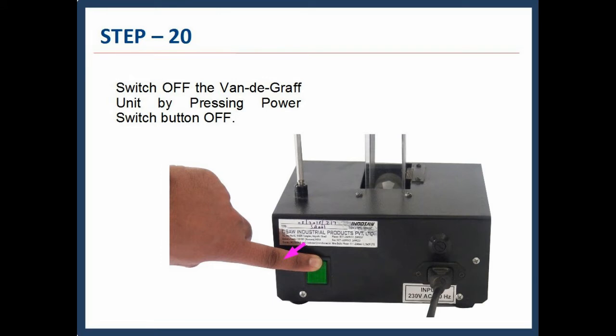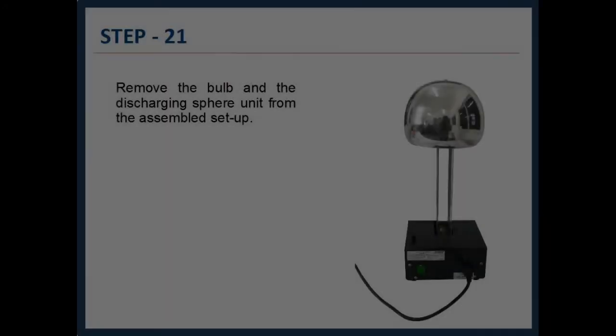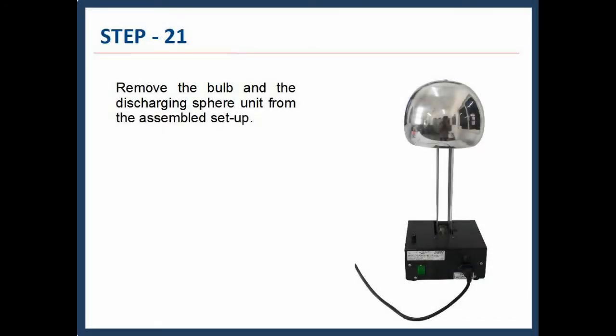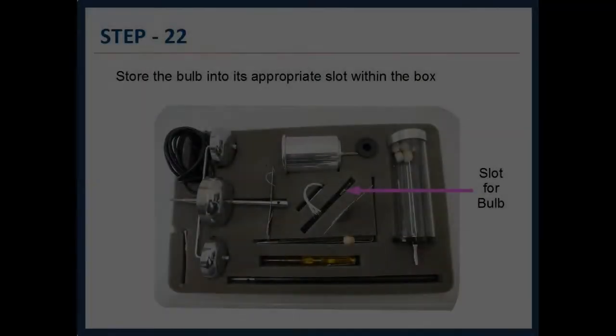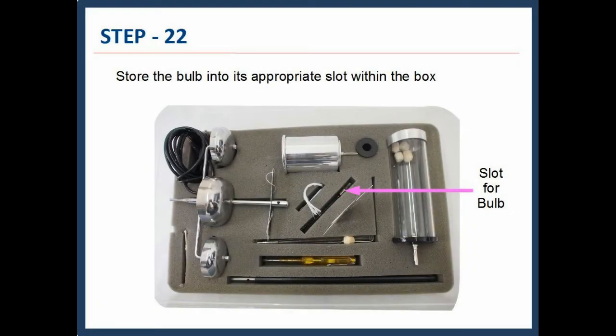Step 20: Switch off the Van de Graaff unit by pressing power switch button off. Step 21: Remove the bulb and the discharging sphere unit from the assembled setup. Step 22: Store the bulb into its appropriate slot within the box.